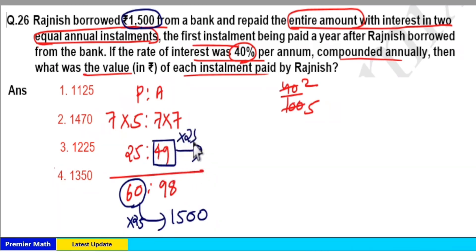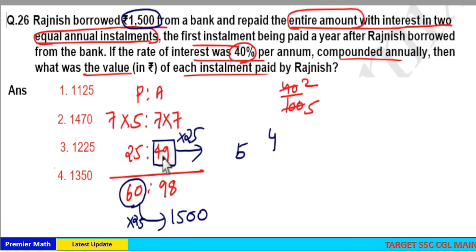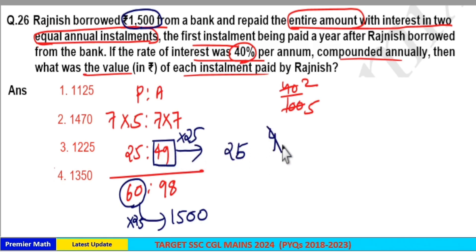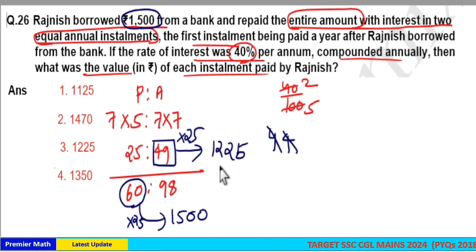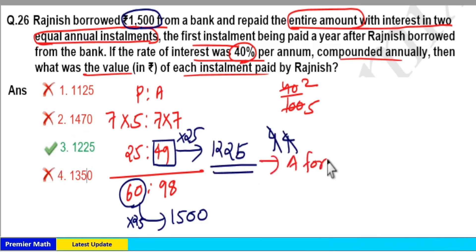So 49 parts equals 49 multiplied by 25, which equals 1225. Option 3 is your answer.